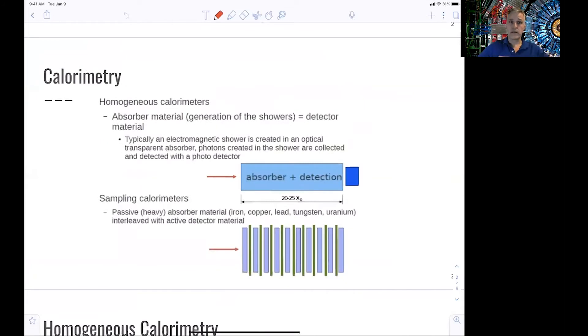Conceptually, you can differentiate between homogeneous calorimeters and sampling calorimeters. In homogeneous calorimeters, the entire absorber material is the same as the detector material. An example is lead glass, which is often used. What you do then in the calorimeter is induce electromagnetic and nuclear showers, and the energy of the incoming particle is converted into photons. Then what you need is a photo detector which measures the number of photons coming out of your detector material. For this to work, the detector needs to be transparent.